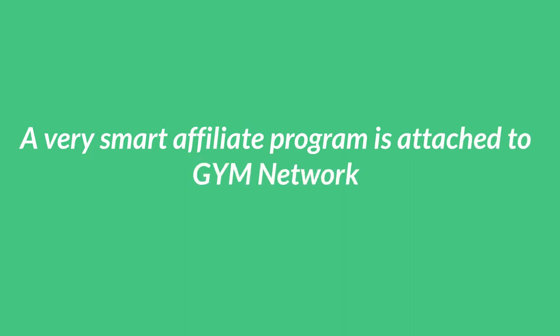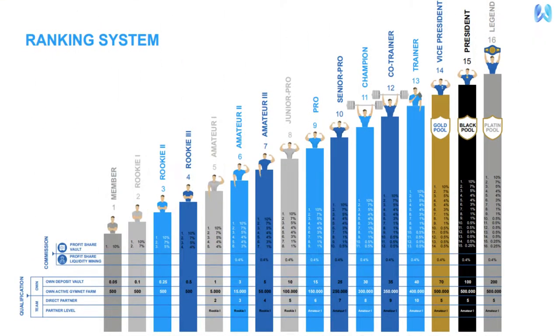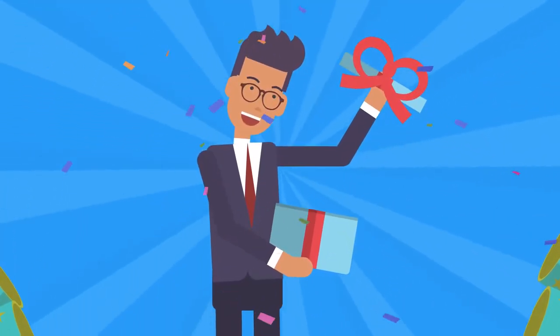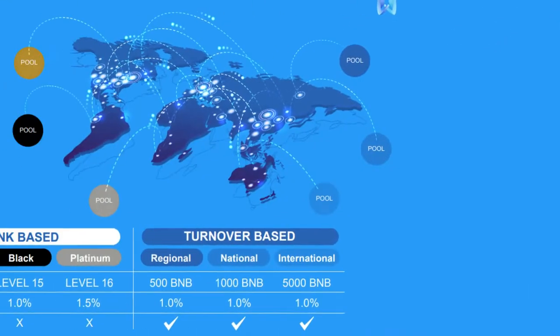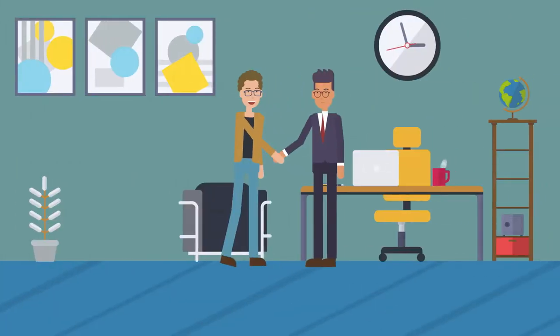A very smart affiliate program is attached to Jimnetwork to increase popularity of the ecosystem. 39% of the passive income will go into the 16-level affiliate plan. Members will be rewarded for helping the community to grow. Another 6% will be reserved for global commission pools to reward the most active affiliate partners.